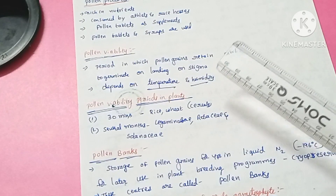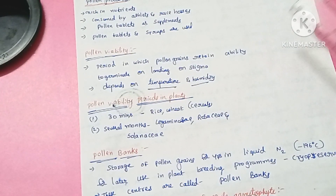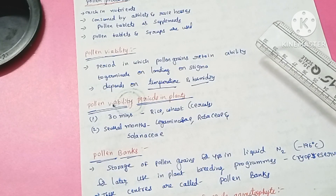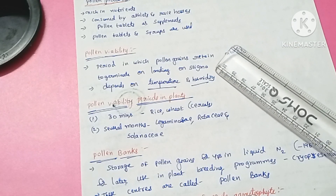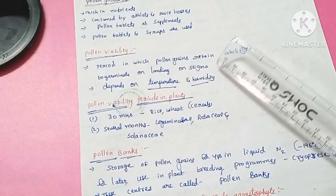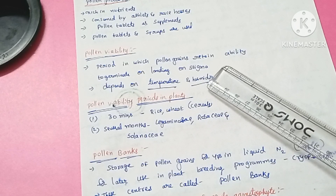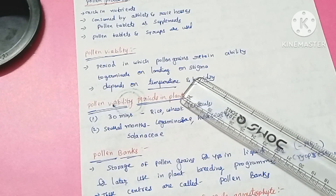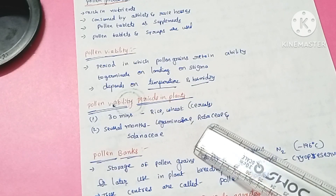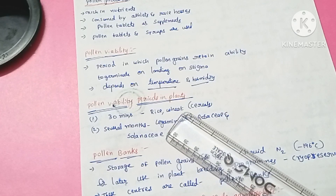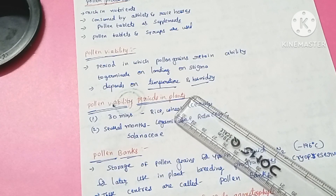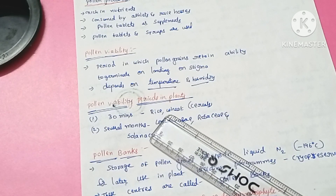The next concept is pollen viability. Pollen viability refers to the period during which pollen grains retain the ability to germinate upon landing on the stigma, which is the female reproductive organ. Pollen viability varies from plant to plant depending upon temperature and humidity.